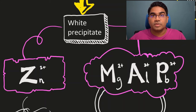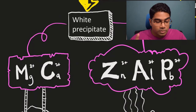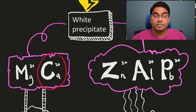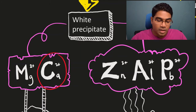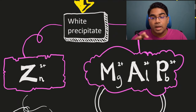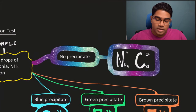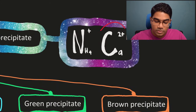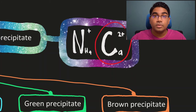Calcium is not part of the ZMAP story. So if you don't get a white precipitate when you add a few drops of ammonia solution, but you do get a white precipitate when you add sodium hydroxide solution, then we know that calcium is most definitely present. If you add a few drops of sodium hydroxide solution and you get a white precipitate, then when you add a few drops of ammonia solution and you have no white precipitate, then we know that calcium ion is present. Calcium ion also does not form a white precipitate when we add a few drops of ammonia solution.